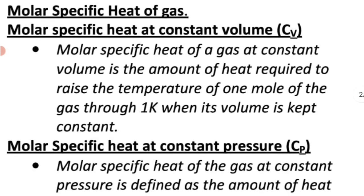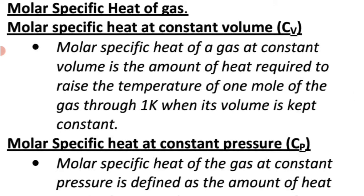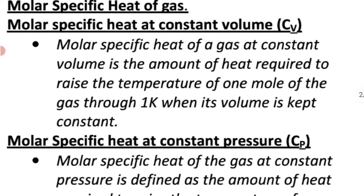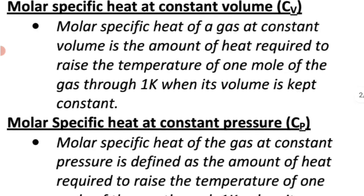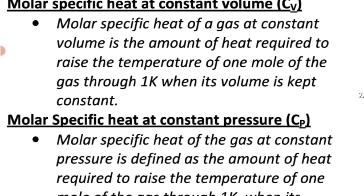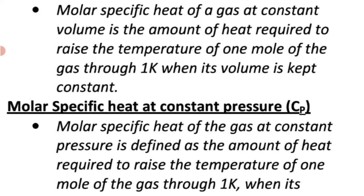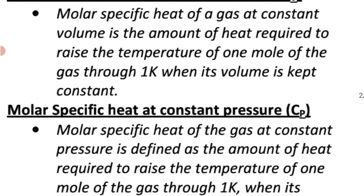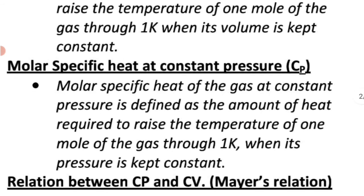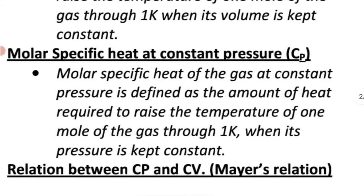We will discuss in detail about molar specific capacities of gases. When we discuss the molar specific capacity of gases, we have two molar specific capacities: molar specific capacity at constant volume, represented by Cv, and molar specific capacity at constant pressure, Cp. Molar specific heat of a gas at constant volume is the amount of heat required to raise the temperature of 1 mole of the gas through 1 kelvin when its volume is kept constant. Molar specific capacity at constant pressure is the amount of heat required to raise the temperature of 1 mole of the gas through 1 kelvin when the pressure is kept constant.